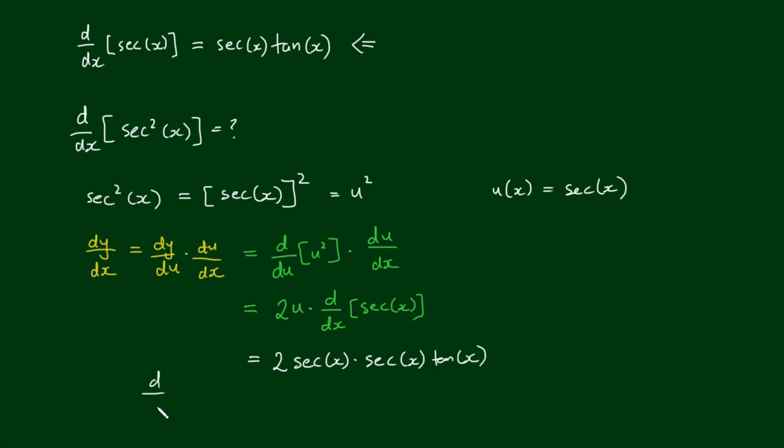And thus the result is the derivative of the secant squared of x equals 2 times the secant squared of x by the tan of x.